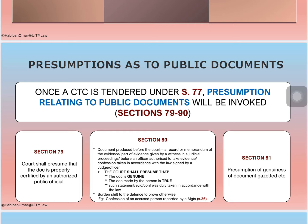Another presumption is found under section 80, which deals with presumption as to documents produced as records of evidence. Whenever any document is produced before a court purporting to be a record or memorandum of evidence given by a witness in a judicial proceeding, or before an officer authorized by law to take such evidence, or a statement or confession by an accused person taken in accordance with the law and purporting to be signed by a judge, president of a sessions court, or magistrate, the court shall presume that the document is genuine, that the statements are true, and that the evidence or confession was duly taken.